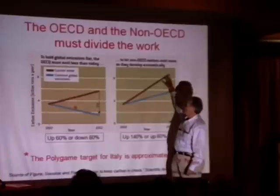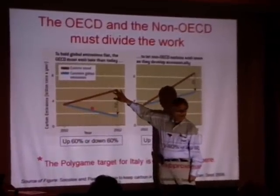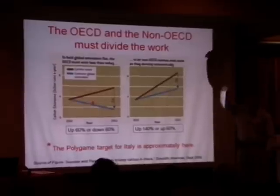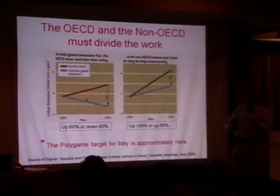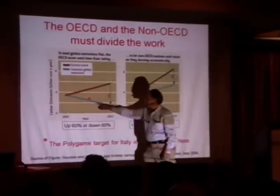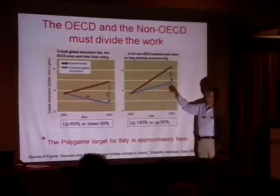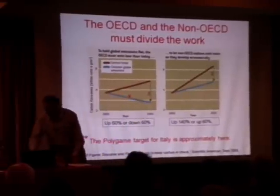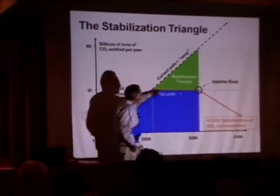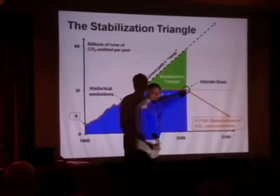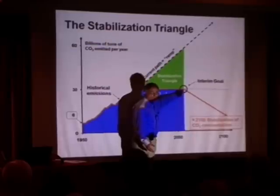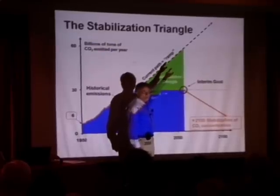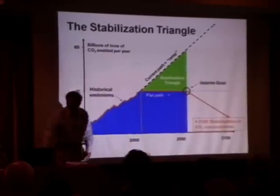If we go to a flat emissions curve for 50 years, the OECD — including Italy — has to go down as much as the developing world goes up. What this means concretely: if the world stays flat, the OECD might go down 60 percent while outside-OECD goes up 50 percent. Alternatively in the business-as-usual scenario, OECD might go up 60 percent and developing countries go up 160 percent. I'm making a fuss about this because you're about to play a game as Italy.